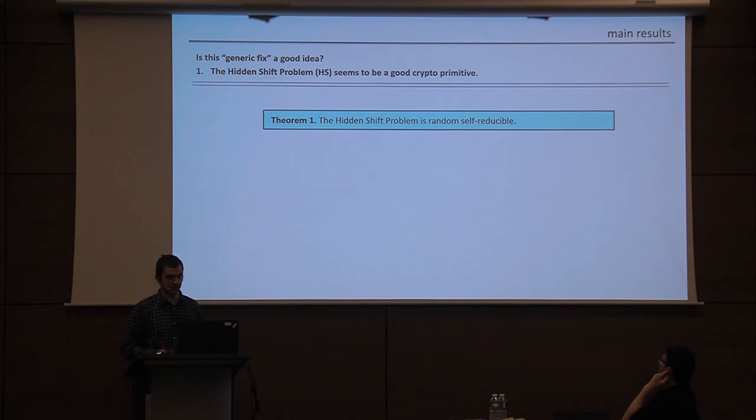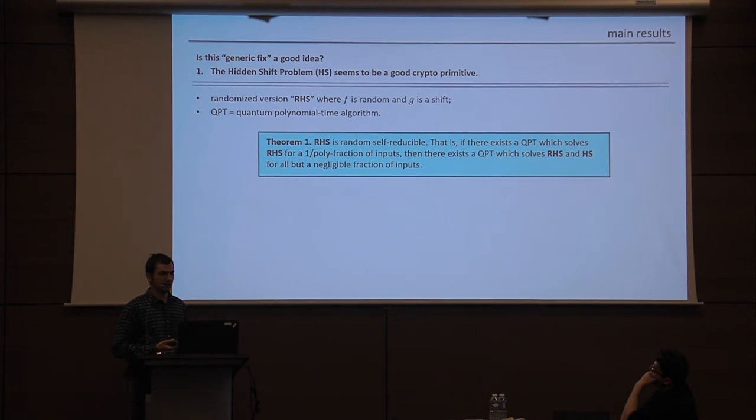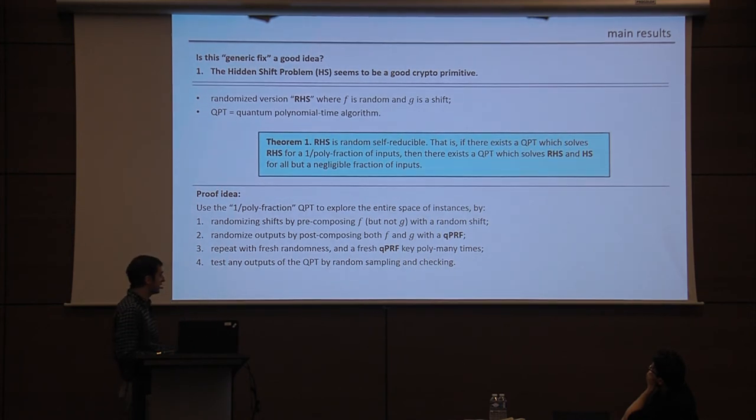So I guess the real question is, is this fix a good idea? Should we do this? So when thinking about this problem, as it turns out, we observed some interesting new things about the hidden shift problem that somehow had not been noticed before. And so let me try to first convince you that the hidden shift problem seems to be a good crypto primitive. So first of all, it's random self-reducible. So a little more carefully, what do I mean by that? We mean that if you take a randomized version of the hidden shift problem, where one function is random and the other one is a shift, then in fact you can prove an amplification theorem that says that as soon as you give me a quantum algorithm that solves this problem for an inverse polynomial fraction, a non-negligible fraction of inputs, then in fact I can solve it everywhere. And this is relatively straightforward to do, basically using Jandry's quantum secure PRFs and some simple tricks for randomizing the shift and randomizing the functions around, and then doing some sampling and checking to see if the answer is correct. We can amplify this all the way to one minus negligible success.